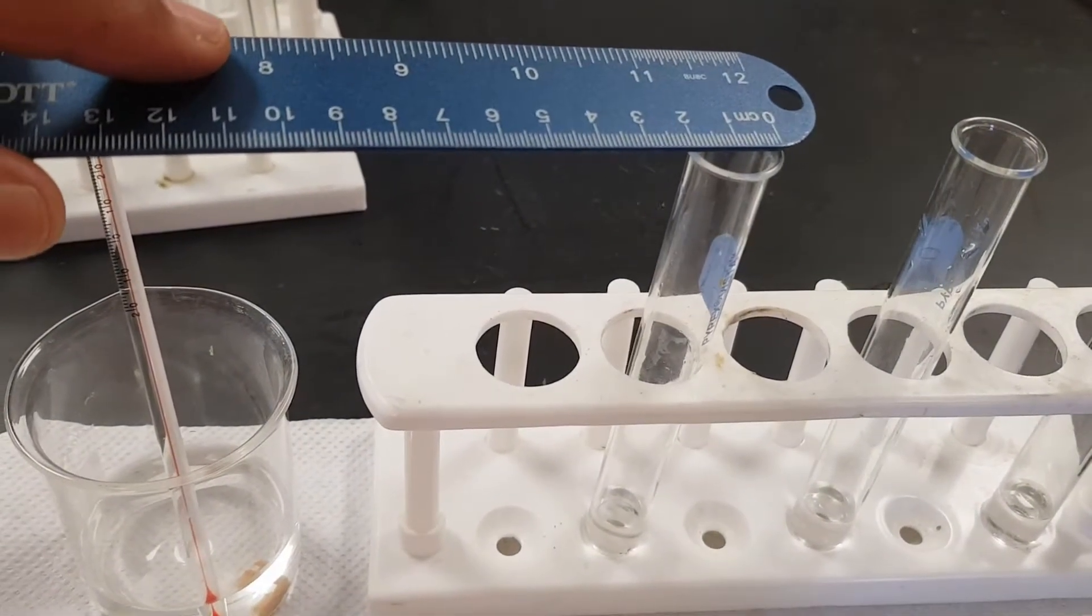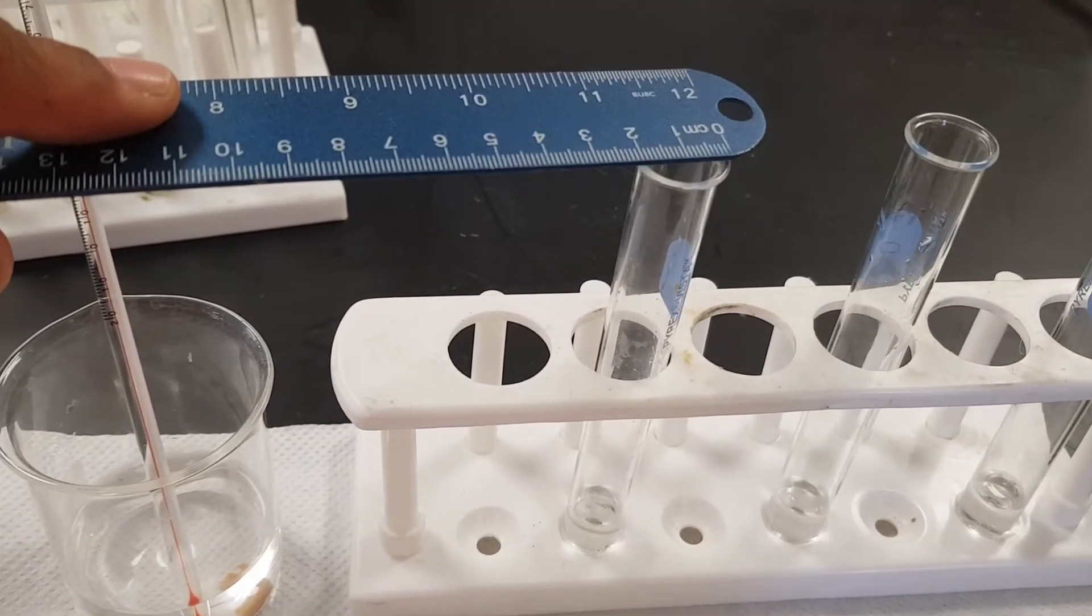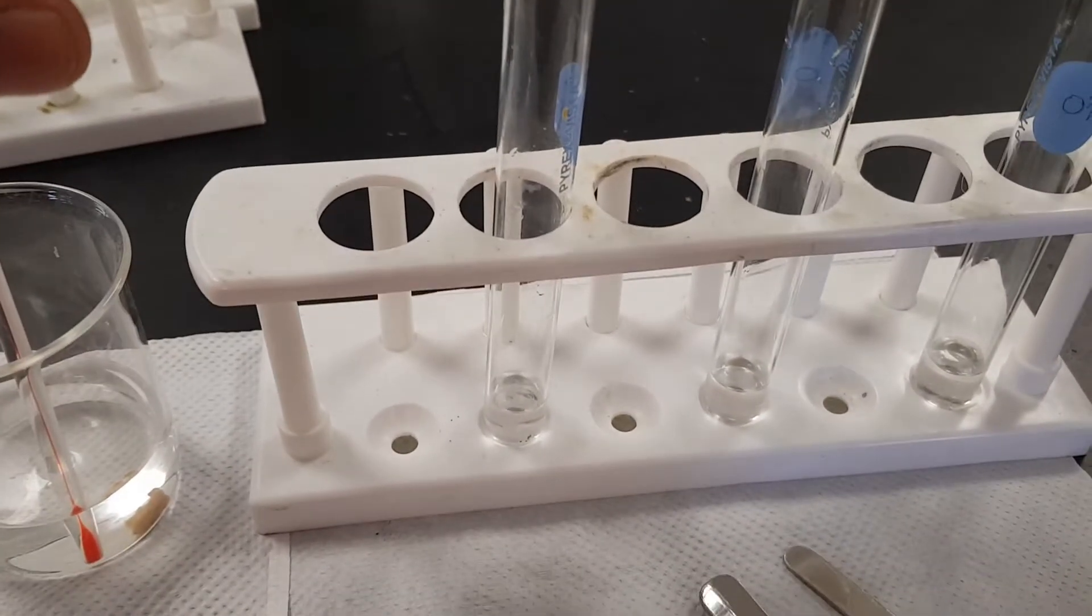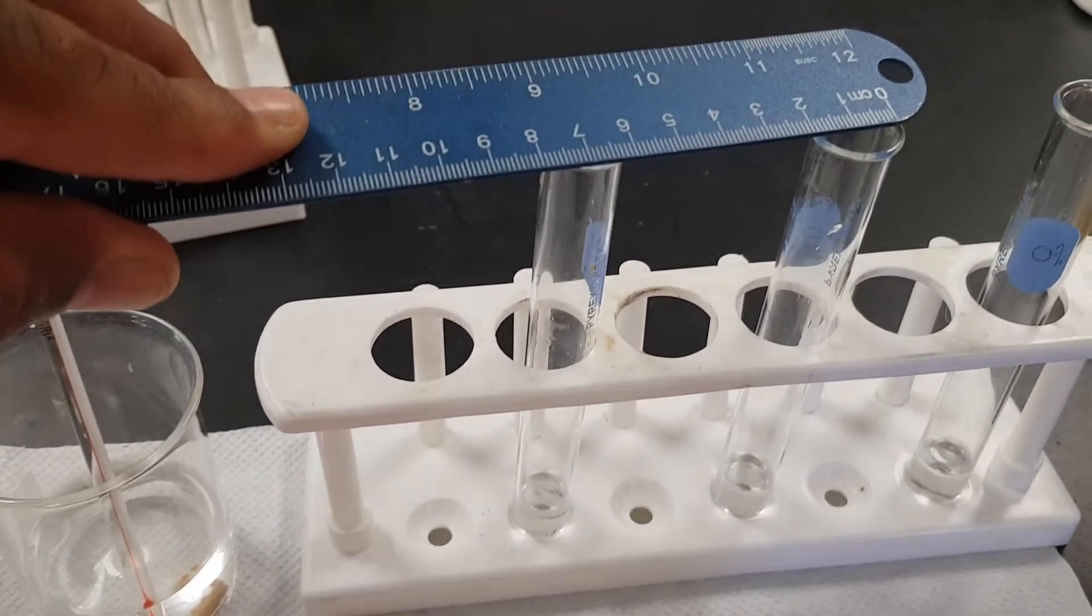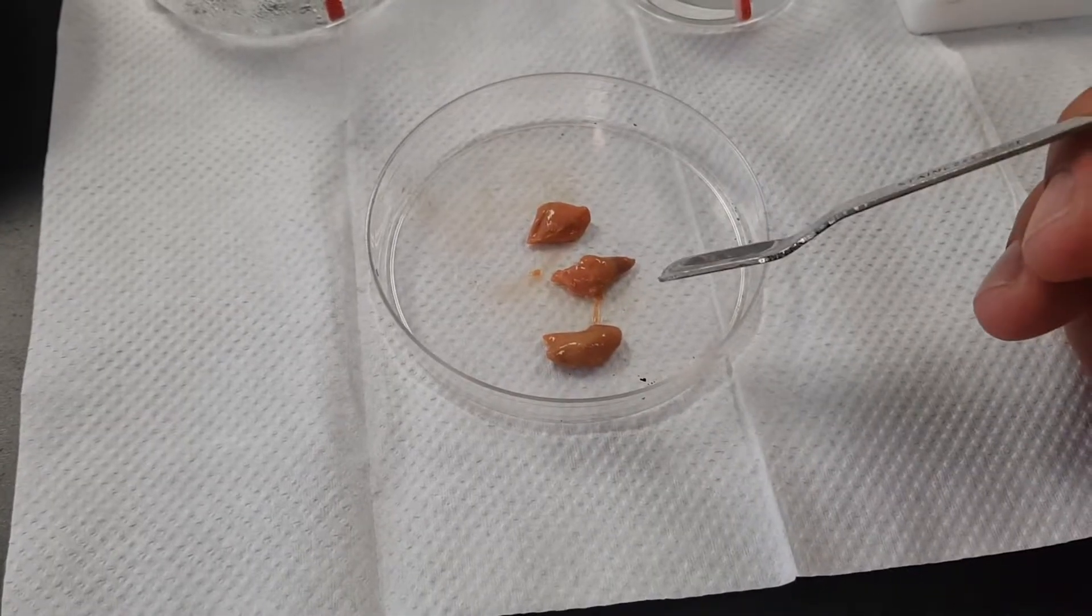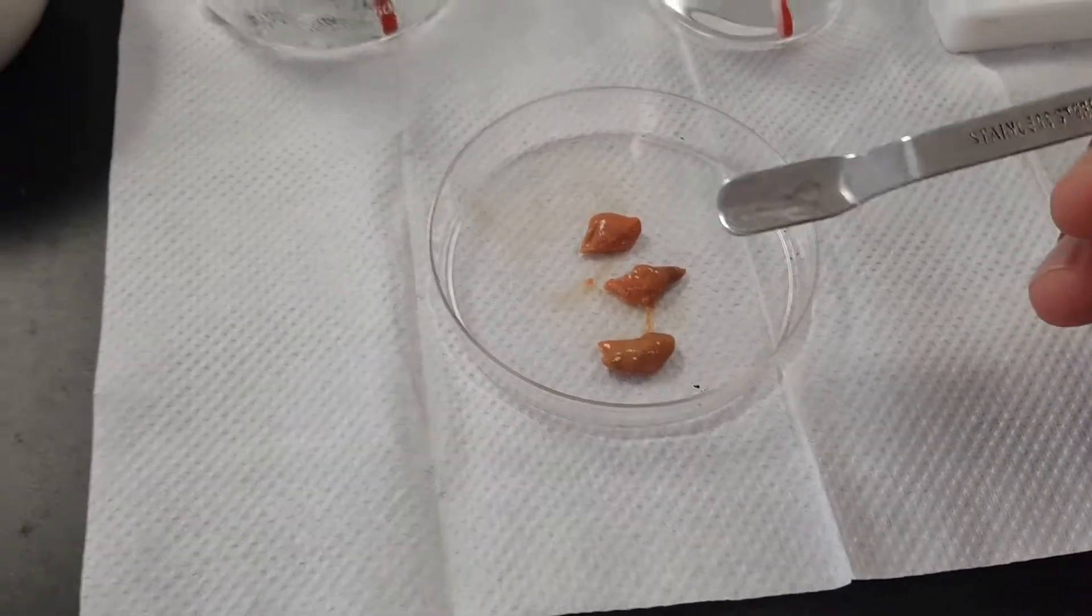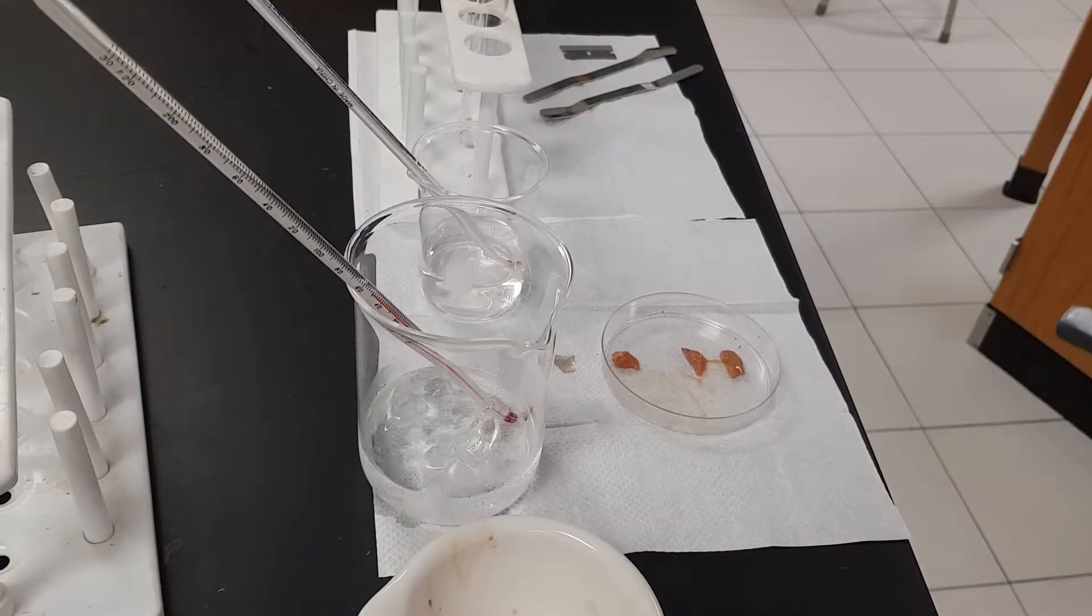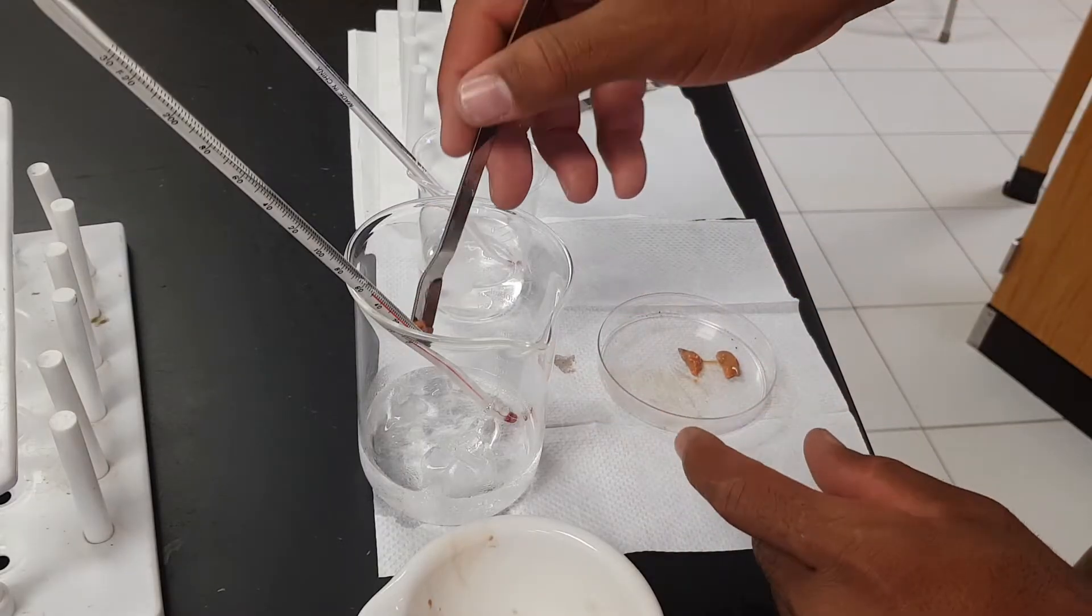Next thing you want to do is to measure the diameter of your test tube. Once you measure the diameter you can find the radius because you will need the radius to do some calculations. The liver is already cut in equal portions. Each of this liver will be placed into different temperatures of water, so one will be placed into the ice water bath.